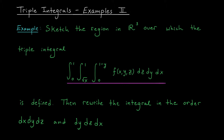Here we're sketching the 3D region over which this triple integral is defined. We're given the bounds and we're going to draw the domain of integration. We'll then use our 3D sketch to rewrite this triple integral in a different order — instead of dz dy dx, we'll write it in the form dx dy dz and then in the form dy dz dx.